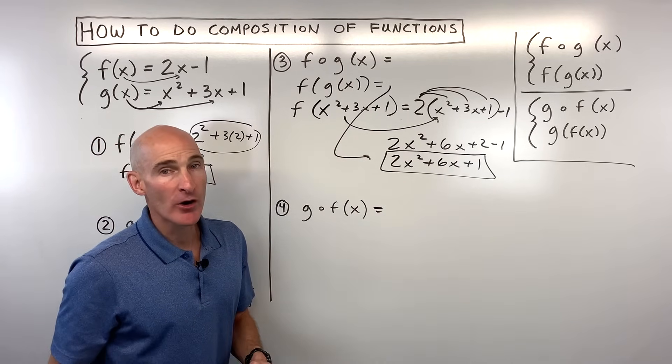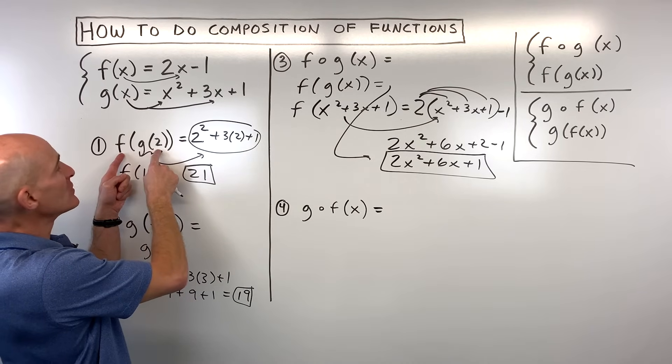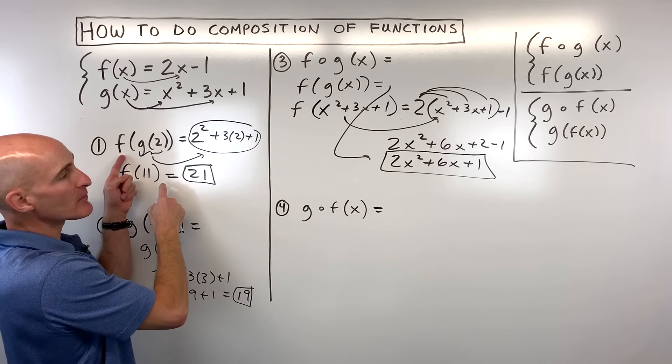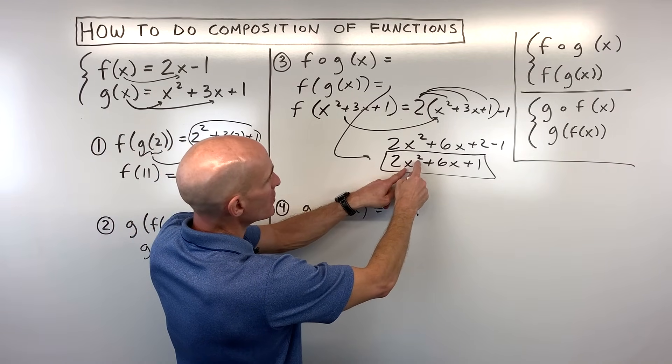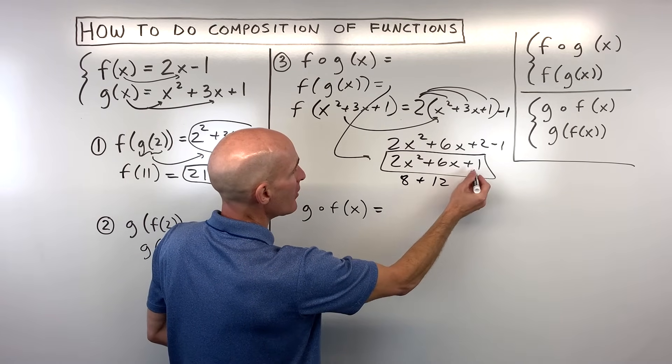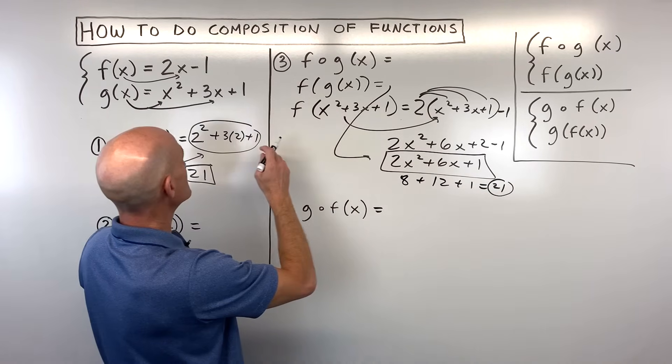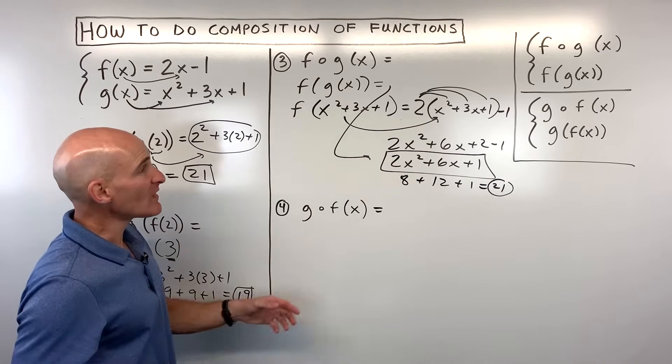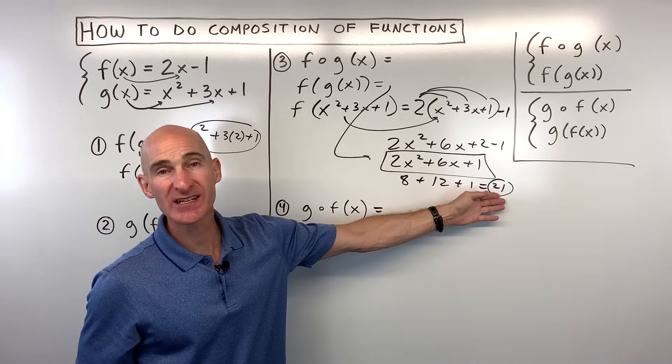Now you might be saying Mario what's the significance of that? Well see how here we had f of g of 2 and we did it in two steps? Well say if we were to put 2 right in here for x we're going to get 2 squared is 4 times 2 is 8 plus 6 times 2 is 12 plus 1. You can see we're getting 21 which is the same thing we got over here.